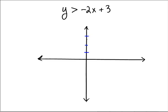Y-intercept for this line is going to be located at 3. So 1, 2, 3, right there. The slope is negative 2, which means we'll go down 2 and to the right 1. So we're going to be over here at the point 1, 1.